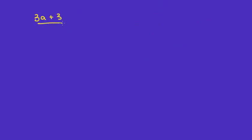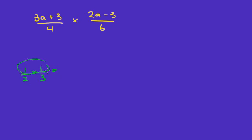Let's move on to multiplication questions. You might have something like (3a + 3) over four times (2a − 3) over six. Multiplication is much easier than addition. Just like with a half times a third — you times the tops and times the bottoms to get one-sixth — we apply the same idea here.